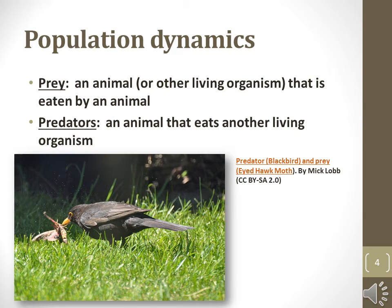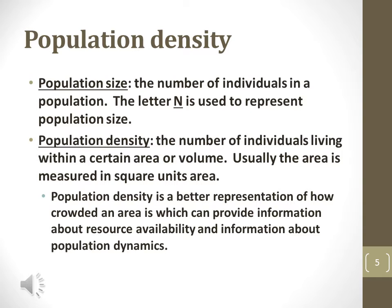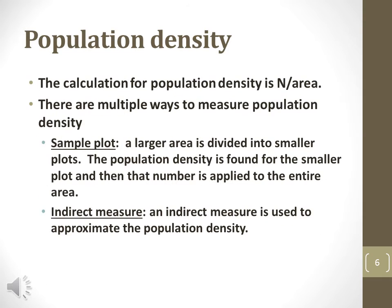Prey is the term for an organism that is consumed for food by another organism. Predators are the organisms that eat other organisms for nutrients and energy. Population size is the number of individuals that comprise a population and is denoted by a capital N. Population density is the number of organisms in a population divided by the area that the population is distributed. The higher the population density, the closer together individuals are on average. The mathematical equation for population density is N over area, which is the population size divided by area.